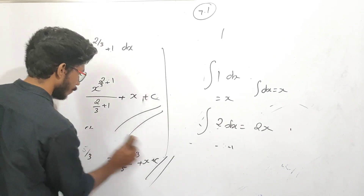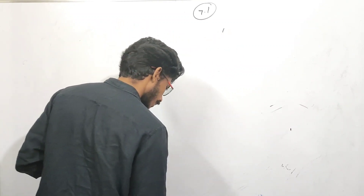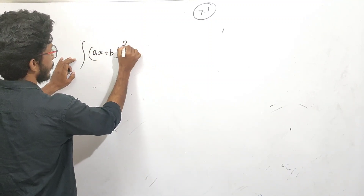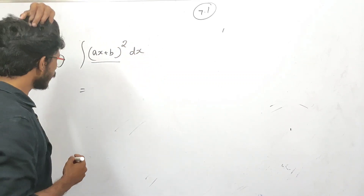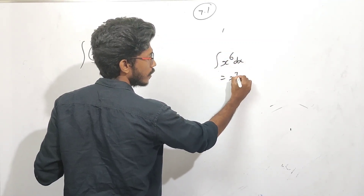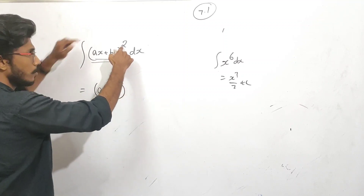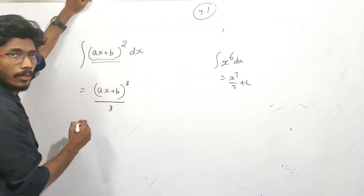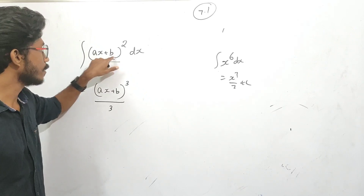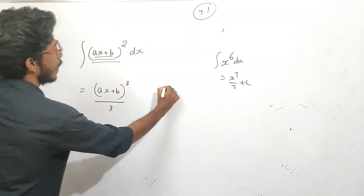The next question: integral of x plus b, the whole square dx. This is simple — suppose integral of x raised to 6 gives power of x raised to 7 by 7 plus c. Similarly, ax plus b the whole raised to 2: the power becomes x raised to 3 by 3. Then the main function is integral divided by the derivative of the inner function — derivative of ax plus b is a.